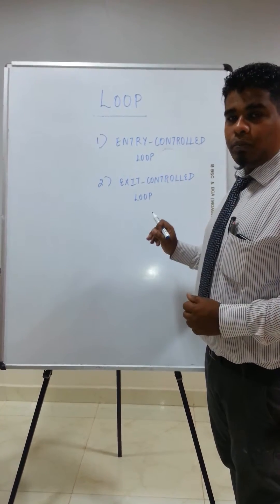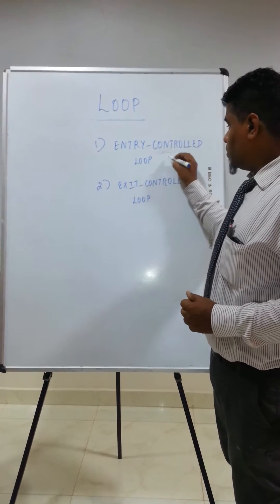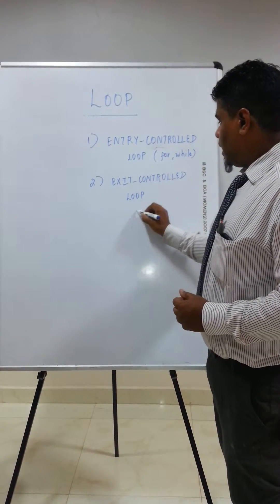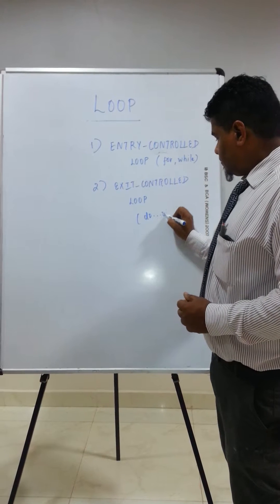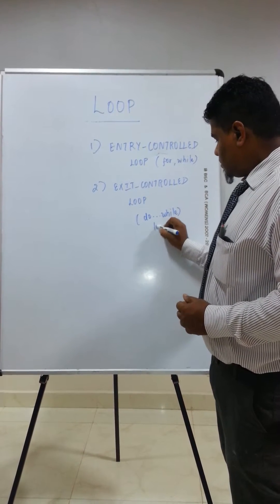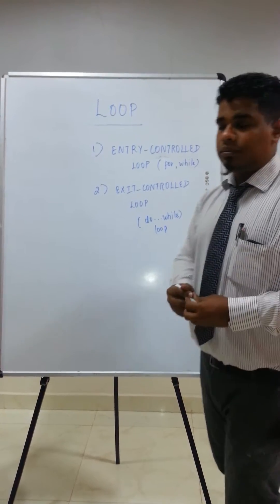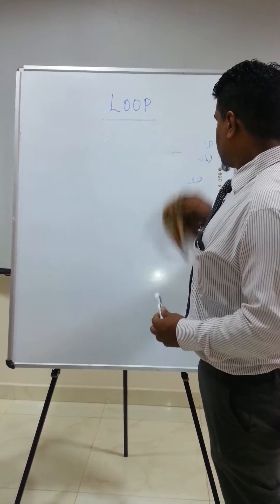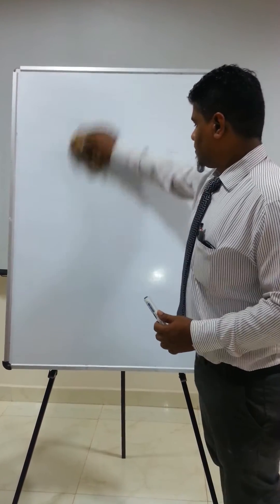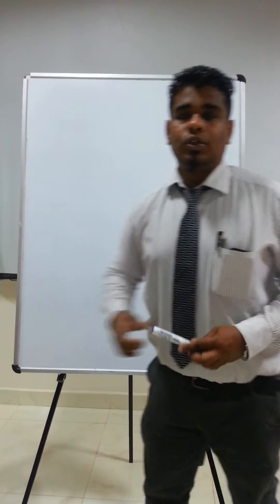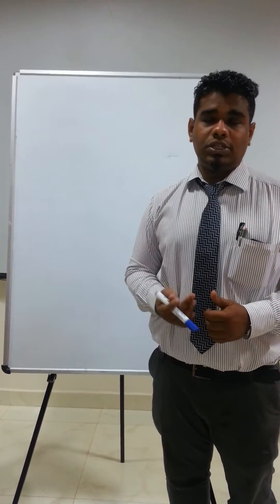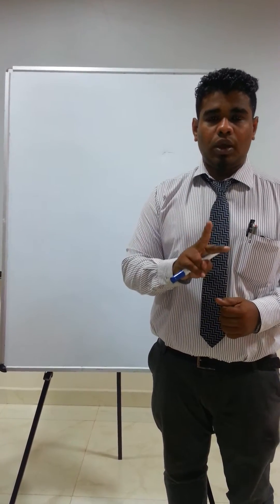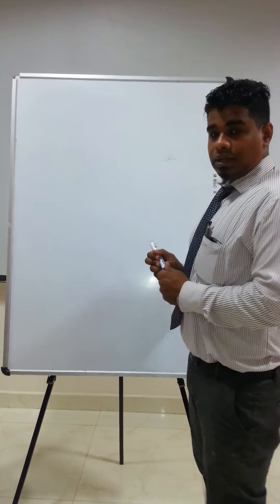The for loop and while loop belong to the category called entry control loop. Now I will teach the concepts of entry control loop. In that, as I told you earlier, we have two loops — one is for and the other one is while. Now I will teach you the for loop.